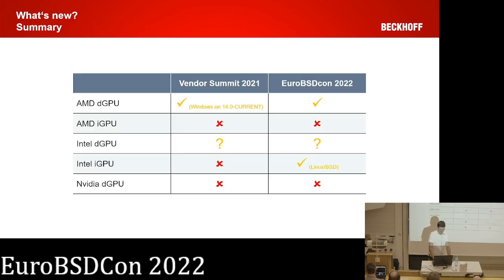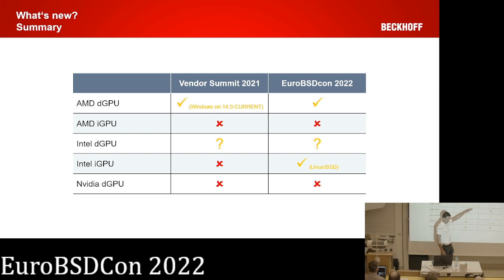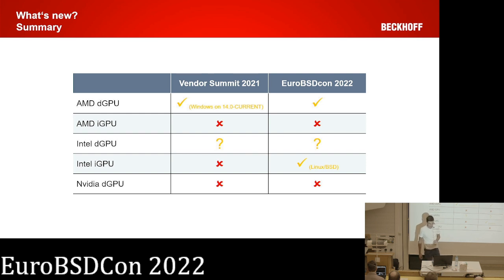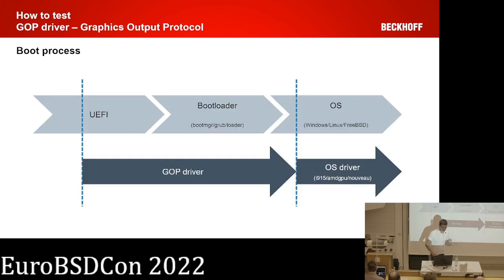To summarize progress since the vendor summit: previously only dedicated AMD graphics worked in FreeBSD current; now they also work in FreeBSD 13.1, with one exception for Linux where the guest OVMF support isn't there yet. And the integrated Intel GPU now works for Linux and BSD.